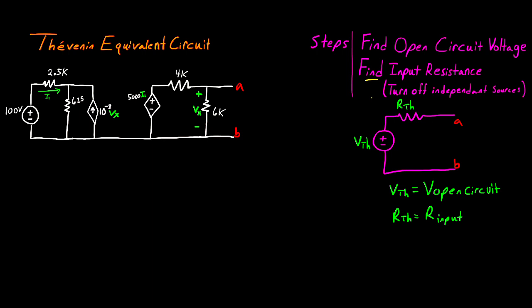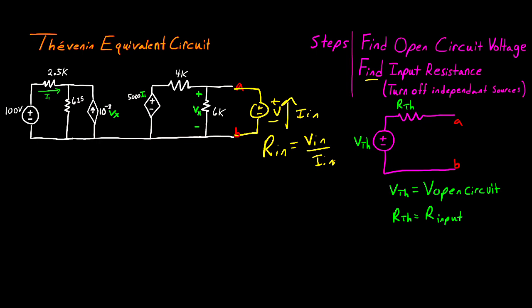The next step is to find the input resistance. This is done by applying a test voltage source and looking at the voltage in and the current in, using the definition of resistance: R_in equals V_in divided by I_in. When you find that ratio, you now know the Thevenin resistance.